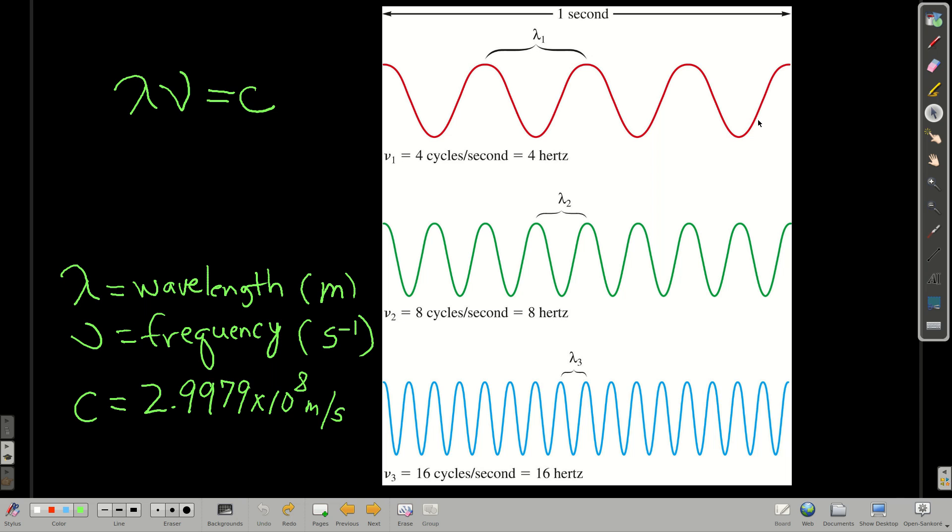Electromagnetic radiation acts as a wave, and you'll see later it acts as a particle too, but we'll get to that. So we need to know a few things about waves. Waves have a wavelength. We're going to use the symbol lambda. The wavelength is just the distance from one part of the wave to the next identical part. So usually we go from the very top of a peak to the very top of the next peak, or from the bottom of a trough to the bottom of the next trough. That distance is the wavelength of that wave.